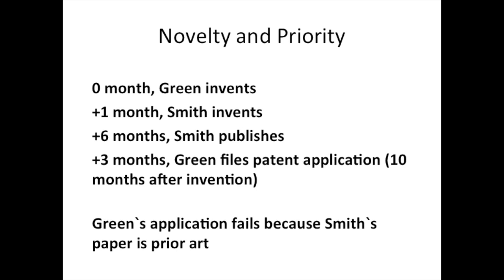What about novelty? Here's an example of how someone else's prior publication of an idea would prevent you from getting a patent, even if you can prove you were the first to invent it. This is a change in U.S. law since 2013, when inventors could keep notebooks and prove they were the first to invent. In this case, even though Green invented first, Smith published first — therefore it is prior art, so Green's patent application would fail.